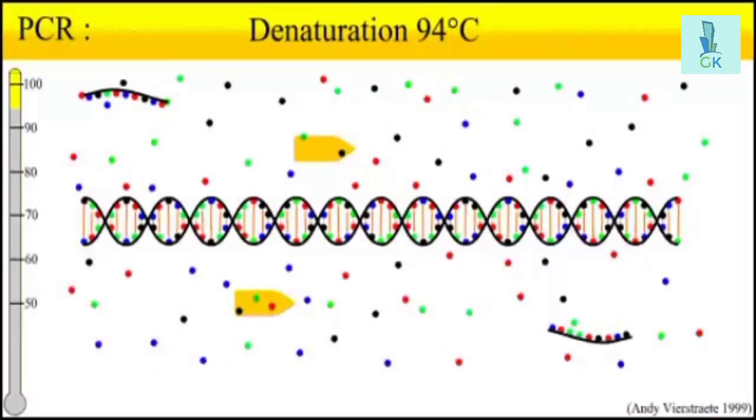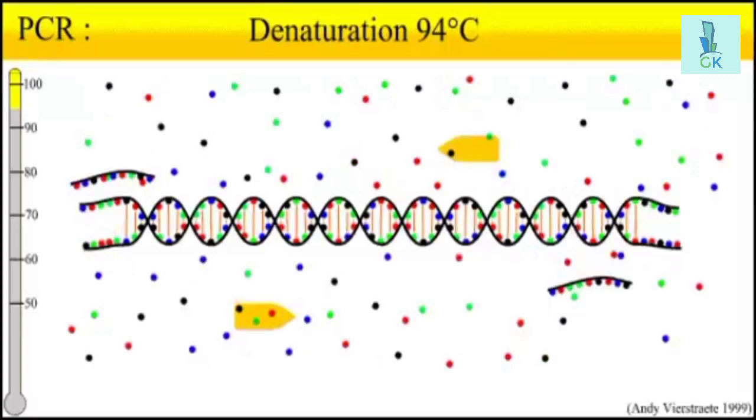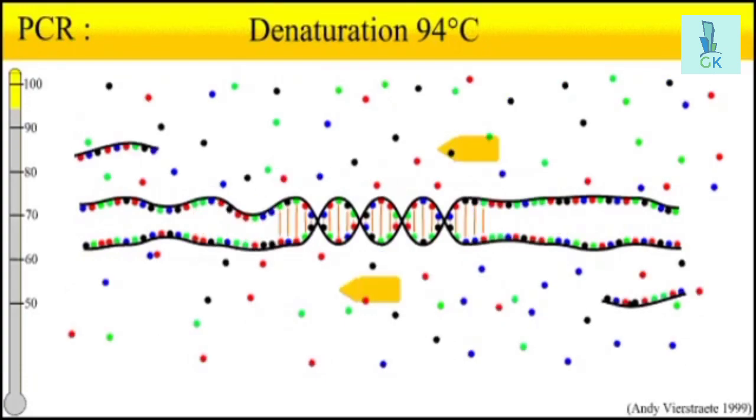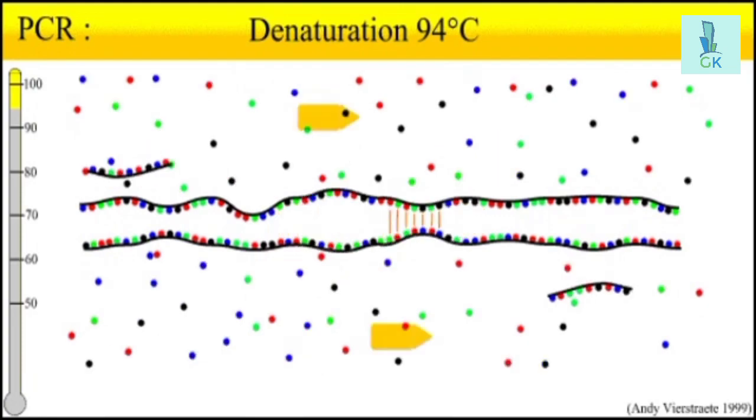From this animated slide we can see that we started with a single DNA, we separated those two, got primer attached to it, and from the primer the DNA is synthesized. So starting from one, now we have two. Every time if we repeat this process, the number of DNA gets doubled.